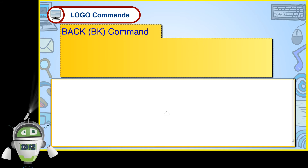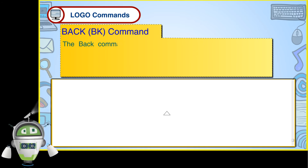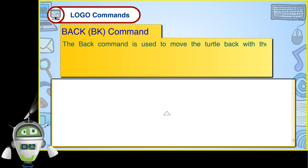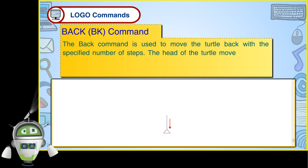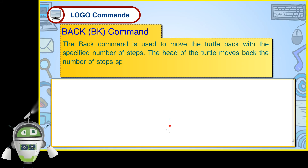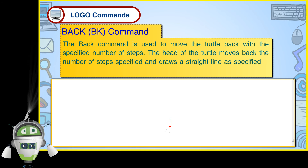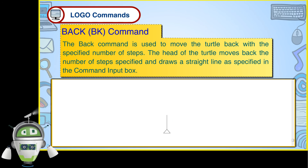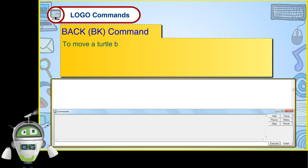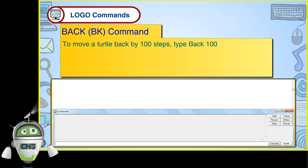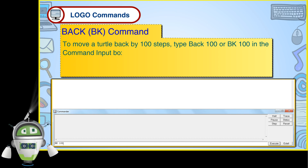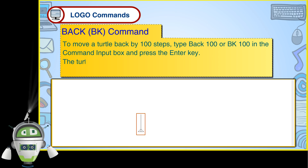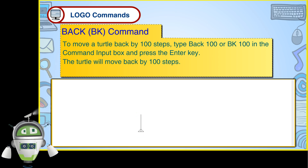Back BK Command. The back command is used to move the turtle back with the specified number of steps. The head of the turtle moves back the number of steps specified and draws a straight line as specified in the command input box. To move a turtle back by 100 steps, type back 100 or BK 100 in the command input box and press the enter key. The turtle will move back by 100 steps.